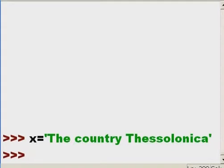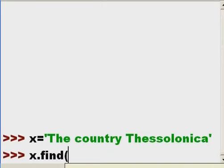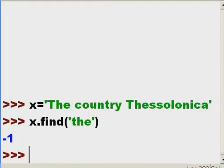First I want to find, in the x variable, the string t-h-e. I have to enclose that within single quotes. And what do I get? I get negative one, it couldn't find it. Why was that? Because I didn't spell it correctly, this is case sensitive.